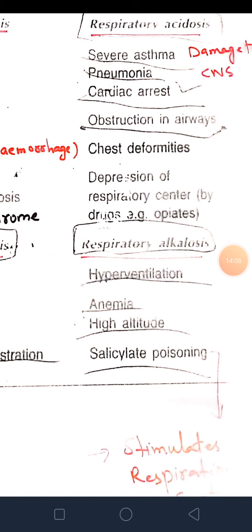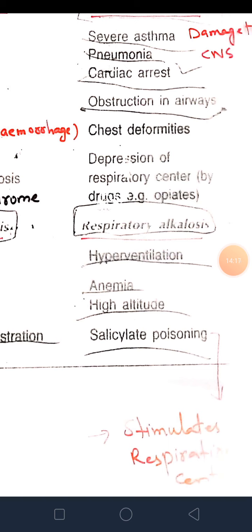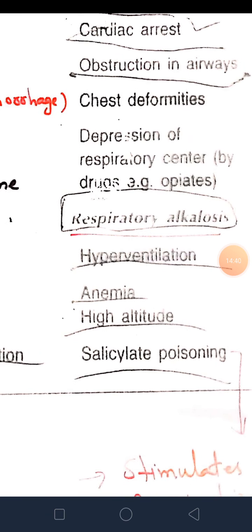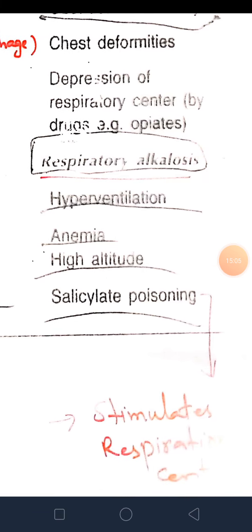The same phenomenon is observed at high altitude — in hilly areas you respire at a high rate because the pressure of oxygen is low. Due to low oxygen pressure, cells are deprived of oxygen, the body needs more oxygen, and the respiratory system is stimulated, causing hyperventilation. Salicylate poisoning — drugs containing salicylic acid in their composition — also stimulate the respiratory center in the brain, causing hyperventilation, decreased carbon dioxide, decreased carbonic acid, and leading to respiratory alkalosis.